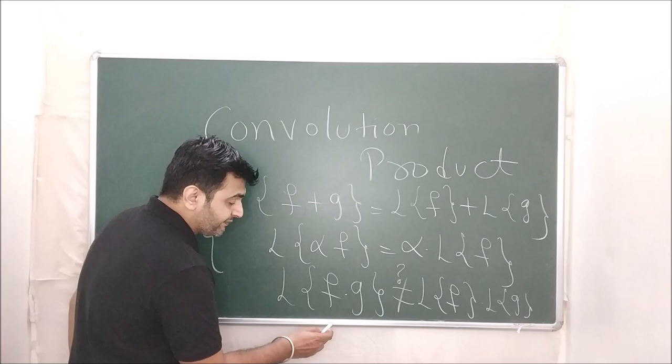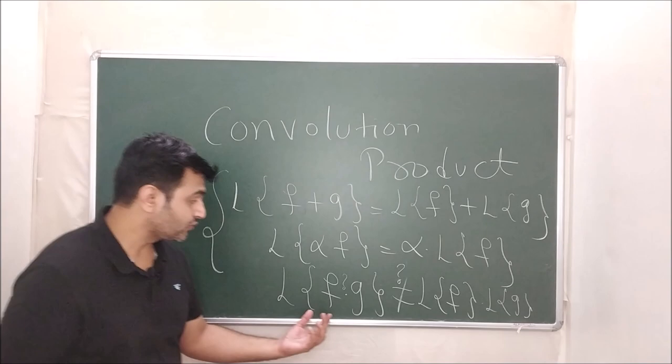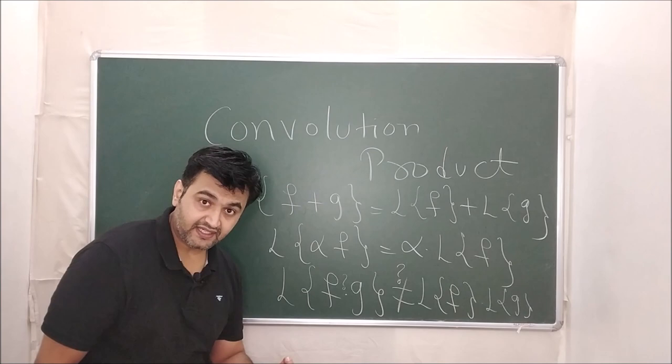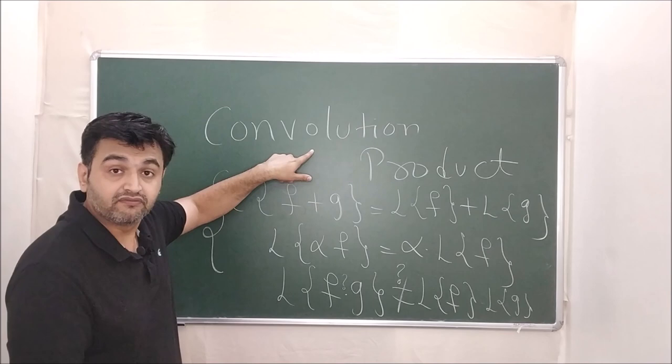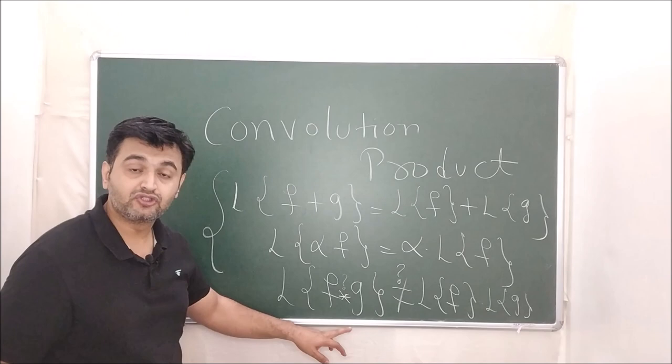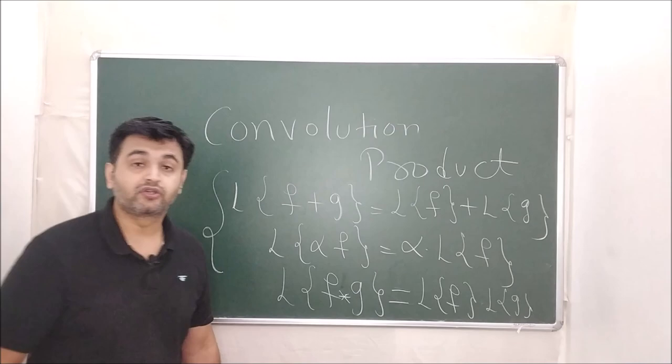So one can ask: instead of multiplication, which operation should you perform between two functions so that you get the product of their Laplace's? The question is — what operation on f and g gives Laplace of (f operation g) equal to the product of Laplace's? That's where convolution comes in. If you take f convolution g, that is actually equal to the product of the Laplace's.